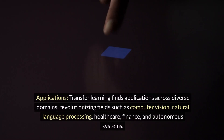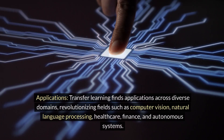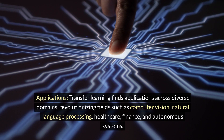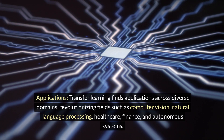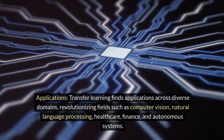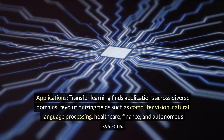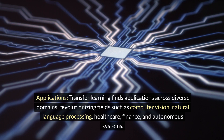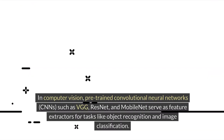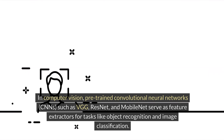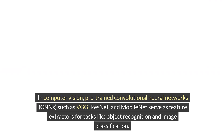Applications. Transfer learning finds applications across diverse domains, revolutionizing fields such as computer vision, natural language processing, healthcare, finance, and autonomous systems. In computer vision, pre-trained convolutional neural networks (CNNs) such as VGG, ResNet, and MobileNet serve as feature extractors for tasks like object recognition and image classification.